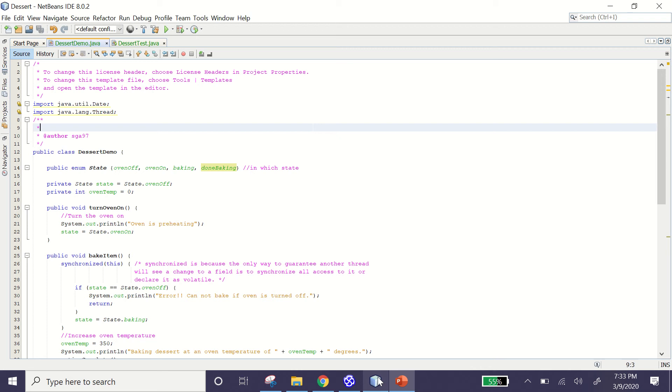So here is my code. I have a main class for the dessert demo. So what my code is doing is baking a dessert. I have different states for the dessert bake time, which shows in the different methods. Oven off, oven on, baking, and done baking. I have a state variable to keep track of the dessert status. We're going to need a method to turn the oven on.